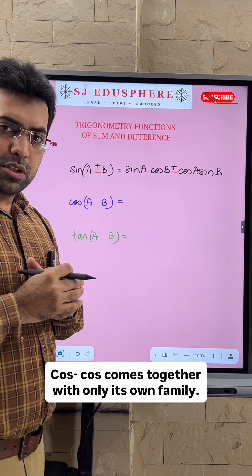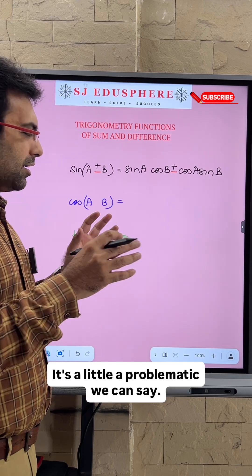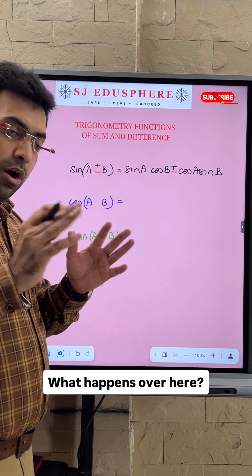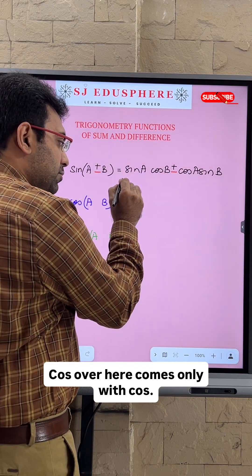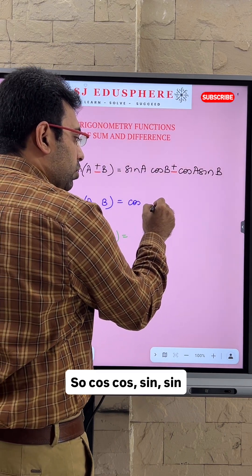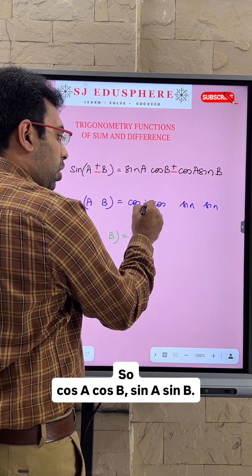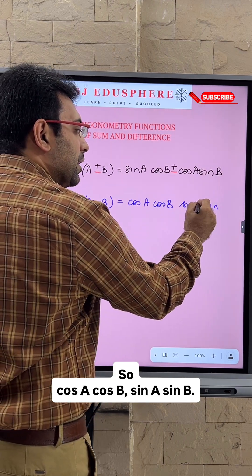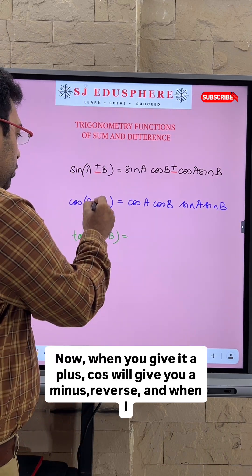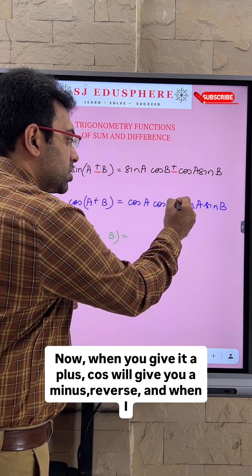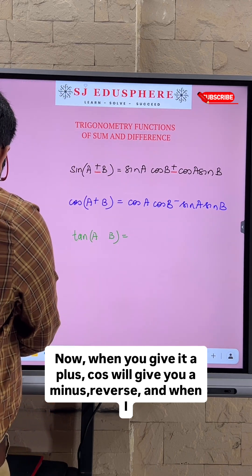Cos comes together with only its own family — it is a little problematic. For the cosine expansion, cos comes only with cos: cos a cos b, paired with cos terms throughout the expansion.